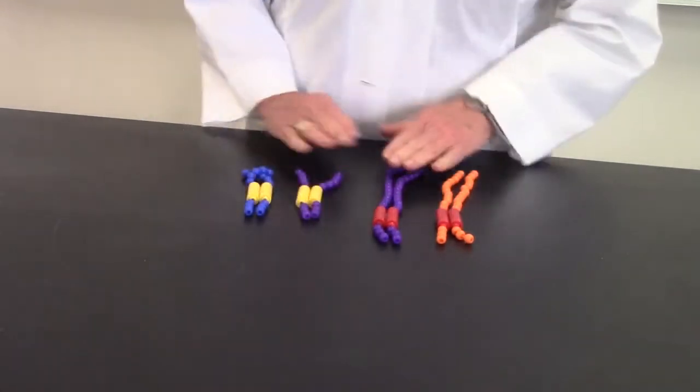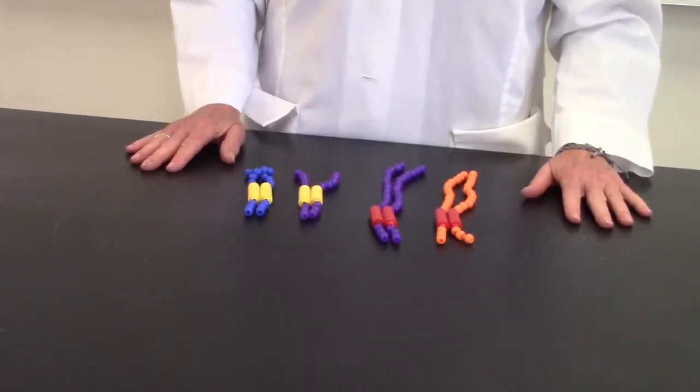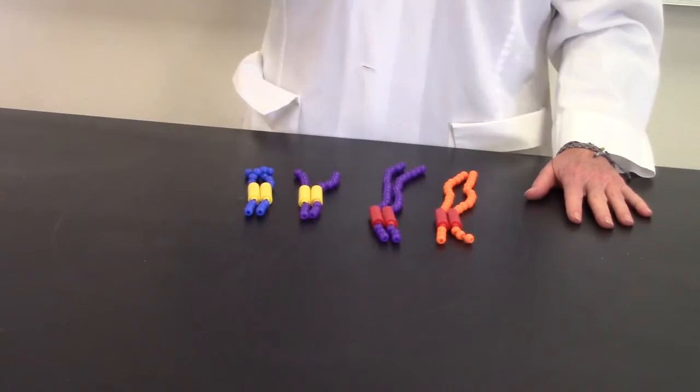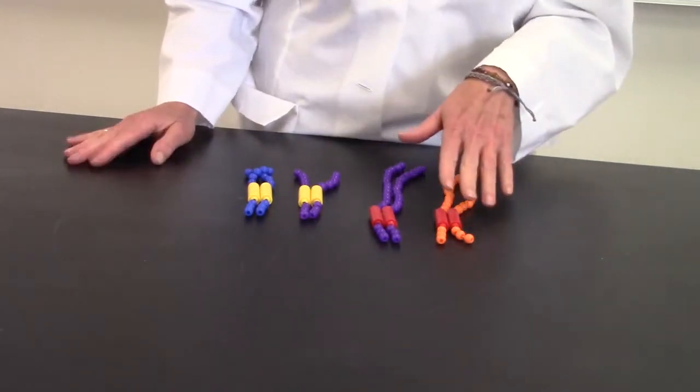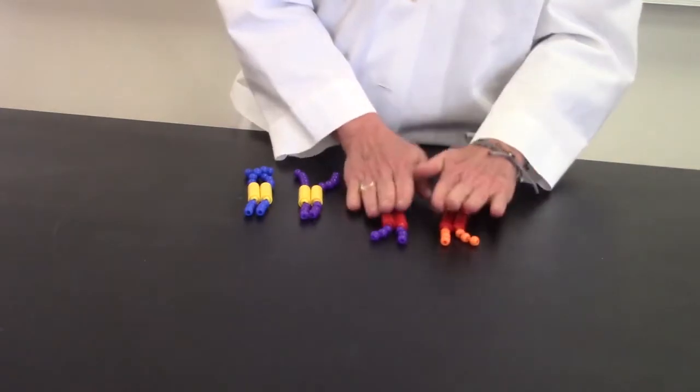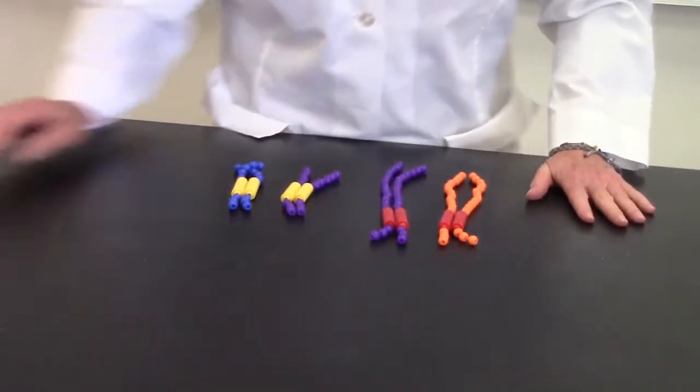We're going to use four pairs to keep it simple. To keep it also simple, instead of saying homologous chromosomes every time, we're going to call them homies because they're pairs.